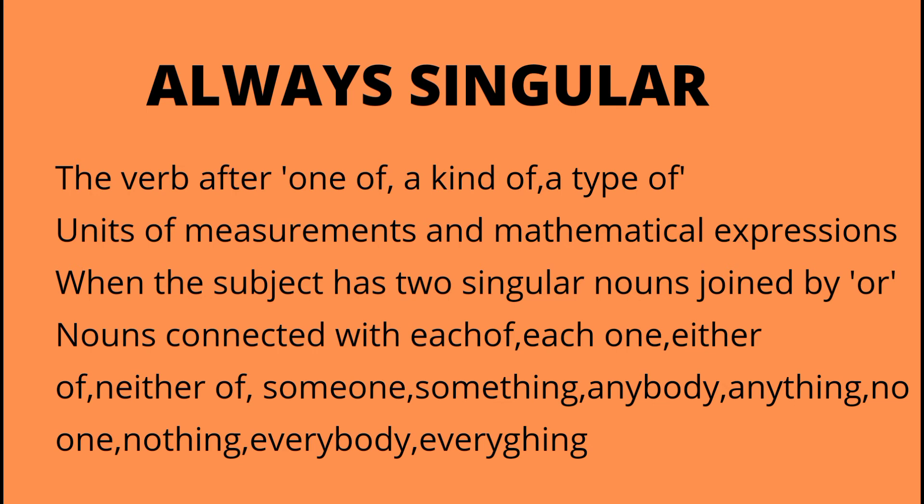The verb after 'one of,' 'a kind of,' 'a type of,' units of measurements, and mathematical expressions is singular. When the subject has two singular nouns joined by 'or,' use a singular verb. Nouns connected with 'each one,' 'either of,' and 'neither of' also take a singular verb. Indefinite pronouns — someone, something, anybody, anything, no one, nothing, everybody, everything — all take a singular verb.